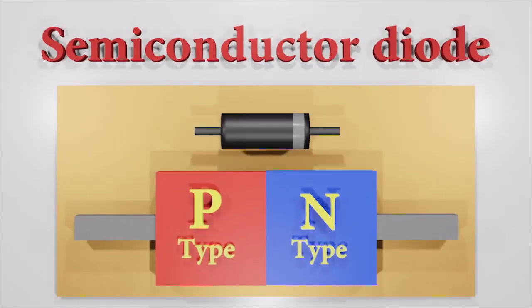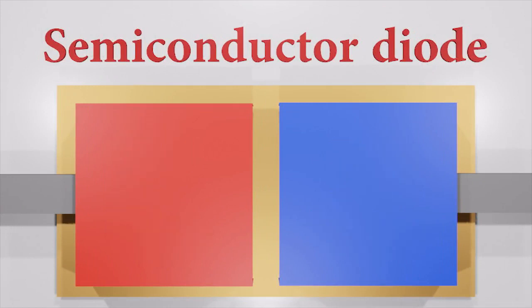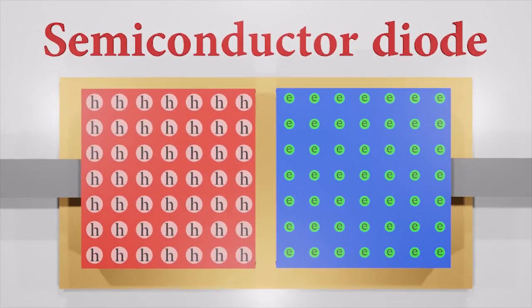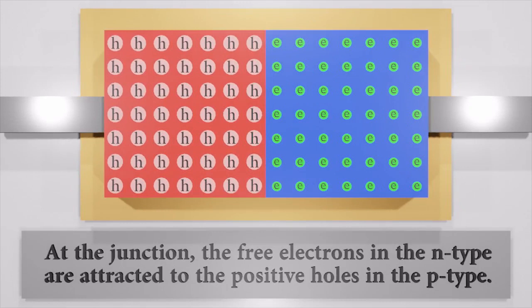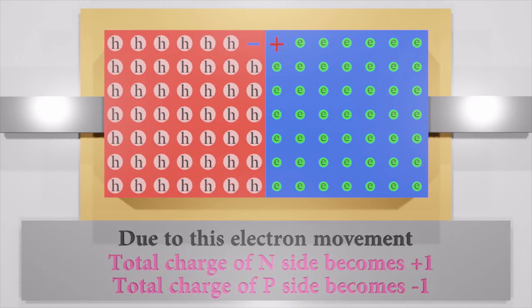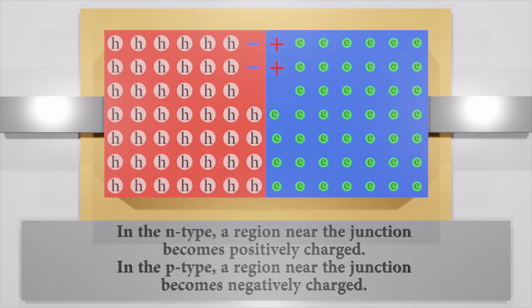Now we know about n-type and p-type semiconductors. Let's see what happens in the p-n junction. At the junction, the free electrons in the n-type are attracted to positive holes in the p-type. For ease of understanding, let's pay attention to only one electron. Due to this electron movement, the total charge of the n-side becomes positive one and the p-side becomes negative one. This happens to every electron near the junction.